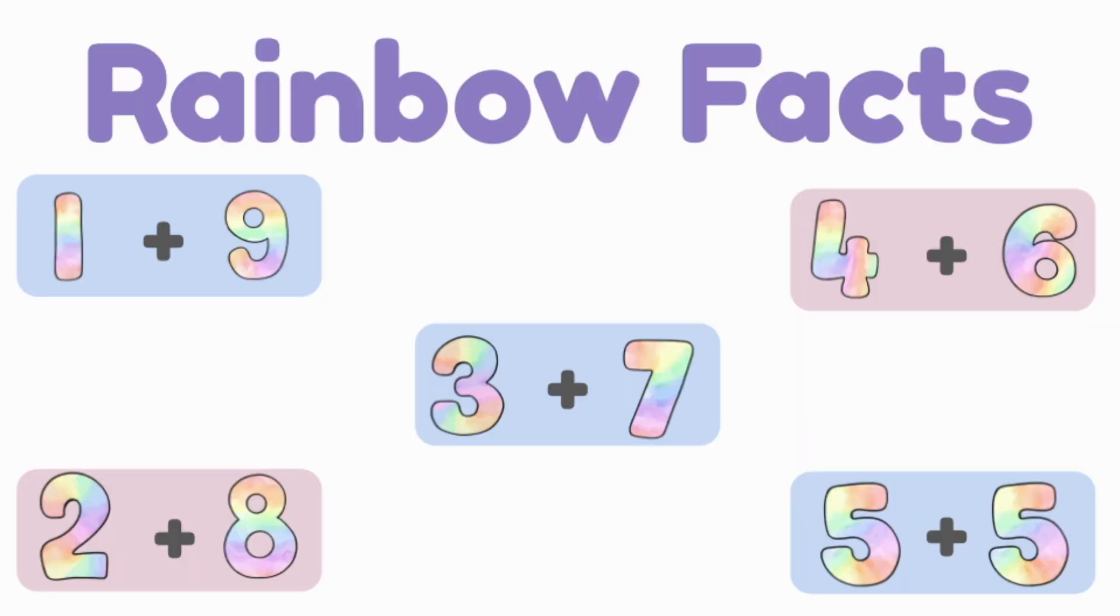Let's have a look at our rainbow facts again. 1 and 9, 2 and 8, 3 and 7, 4 and 6 and 5 and 5. It does not matter what order they go in, they're always friends of 10. They're always partners and they're inseparable.